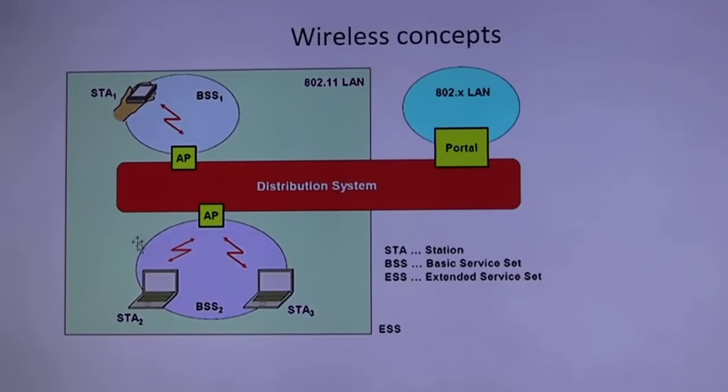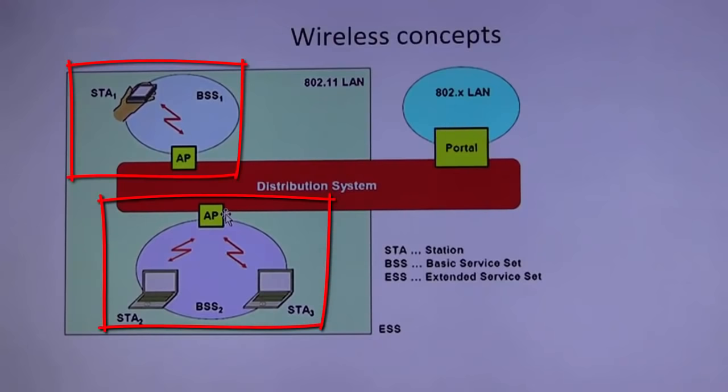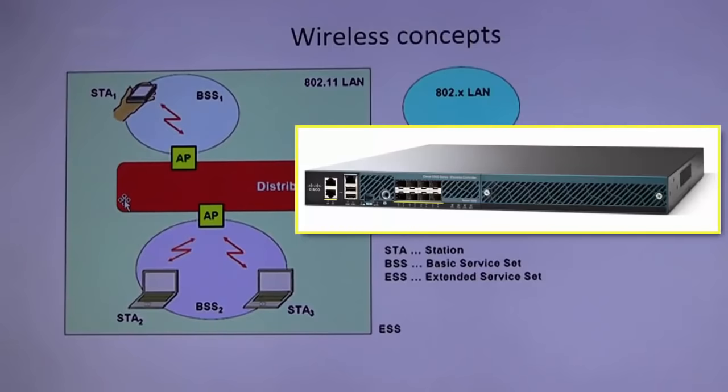If you have more than one Basic Service Set, for example this campus has got multiple BSSs with lots of access points that are interconnected. The access points are interconnected with a distribution system. We have a wireless controller in our network closet that talks to all our access points, so we are an Extended Service Set, ESS.